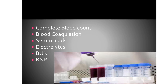Next is blood coagulation. PTT, or partial thromboplastin time, also called APTT or activated partial thromboplastin time, measures the activity of the intrinsic pathway and is used to assess the effects of unfractionated heparin. The therapeutic range is about 1.5 to 2.5 times the control. Next is prothrombin time, which measures the extrinsic pathway activity and is used to monitor the level of anticoagulation with warfarin or coumadin.